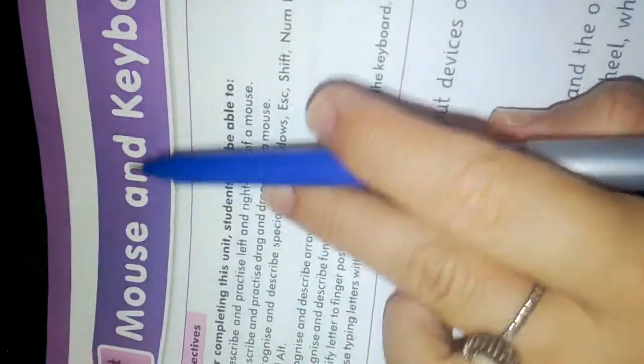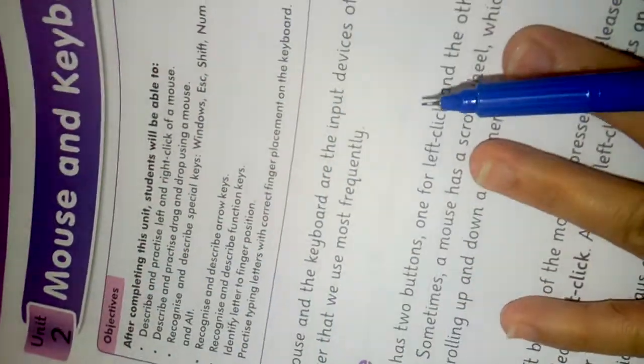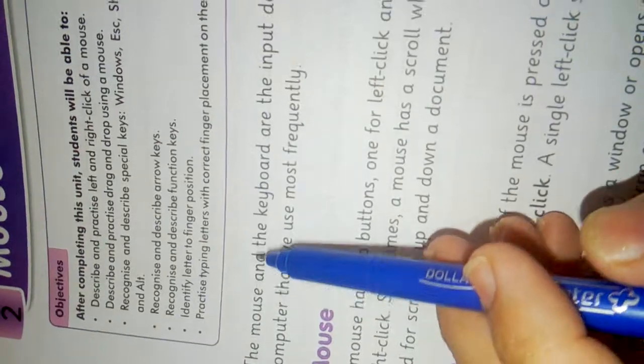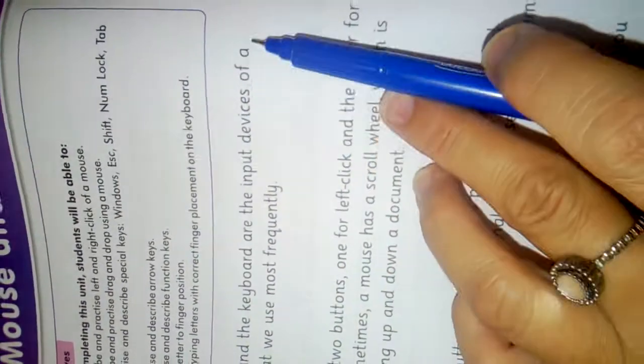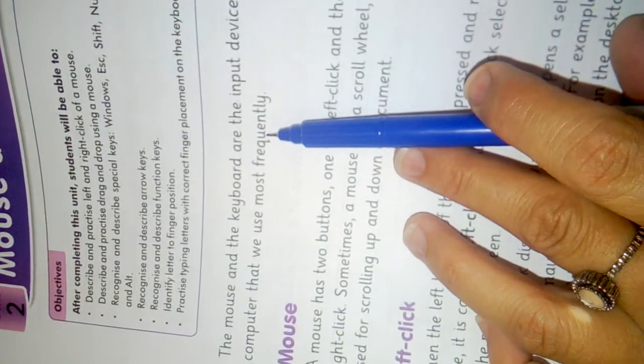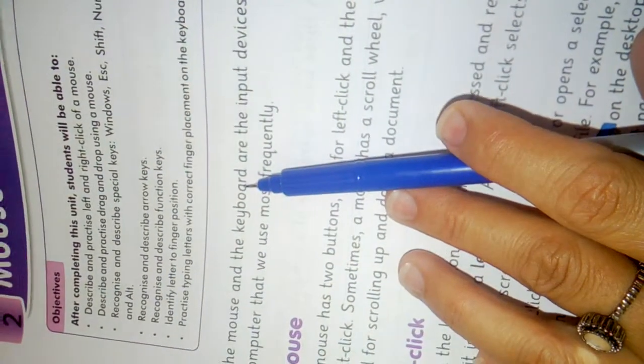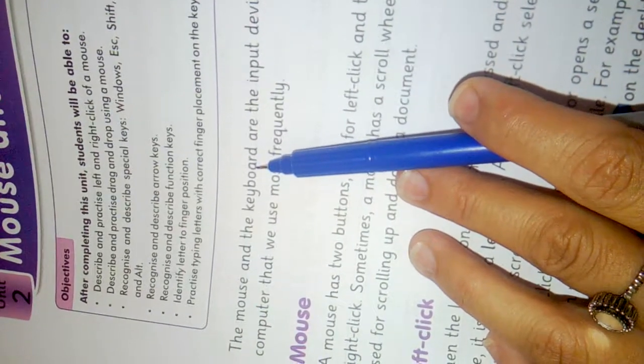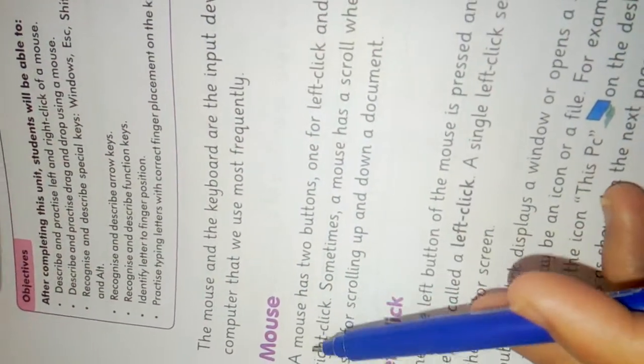Class 2, subject computer. We are going to start our unit 2: Mouse and Keyboard. Mouse and keyboard are two input devices of the computer. The mouse and the keyboard are the input devices of a computer that we use most frequently.